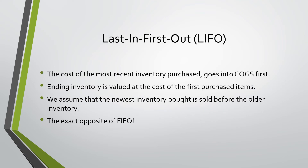Our fourth method is last in first out, LIFO. This is the cost of the most recent inventory purchase that goes into COGS first, and ending inventory is valued at the cost of the first purchased items. We assume that the newest inventory bought is sold before the older inventory — this is the exact opposite of FIFO. A good way to remember this would be whenever the newest iPhones come out; they can assume that they have sold more of the iPhone 12s than the iPhone 10s in the last year because they are the newer item.